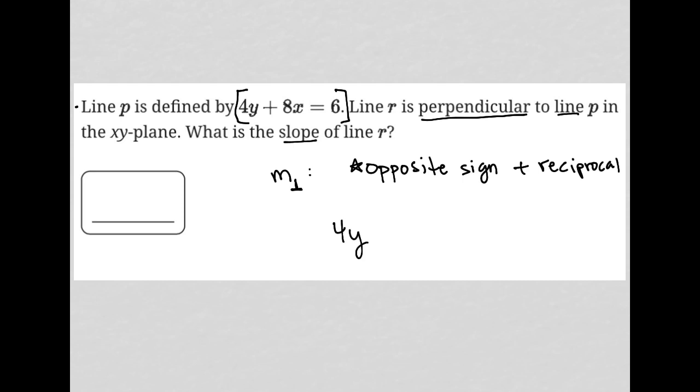So that equation, 4y plus 8x equals 6. The way I'm going to find the slope is by converting it into y equals Mx plus B format, because then I can easily discover my slope, which would be my M value. So basically I'm isolating y here.